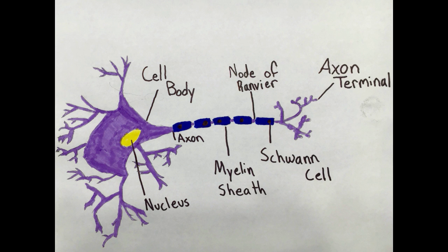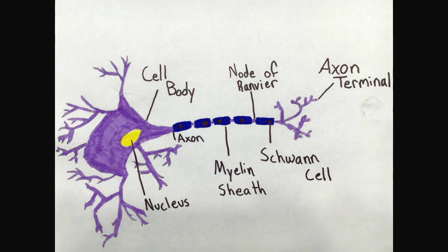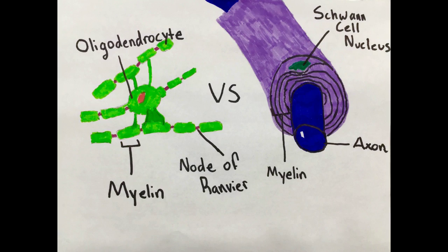Schwann cells will be the main focus of this video. Schwann cells myelinate the axon by wrapping around it, occasionally more than a hundred times. They are only located in the peripheral nervous system. When they myelinate, Schwann cells leave small gaps in between the myelin sheath called nodes of Ranvier. These nodes allow the electric current to jump across them, which increases the speed of transmission.